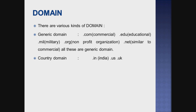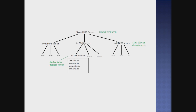So, to summarize, there are two main classes: one is generic domain and another one is country domain. DNS is organized in a hierarchical format in a tree structure. There is a root server at the top, and below it there are DNS servers such as .com DNS server, .in DNS server, and .mil DNS server.